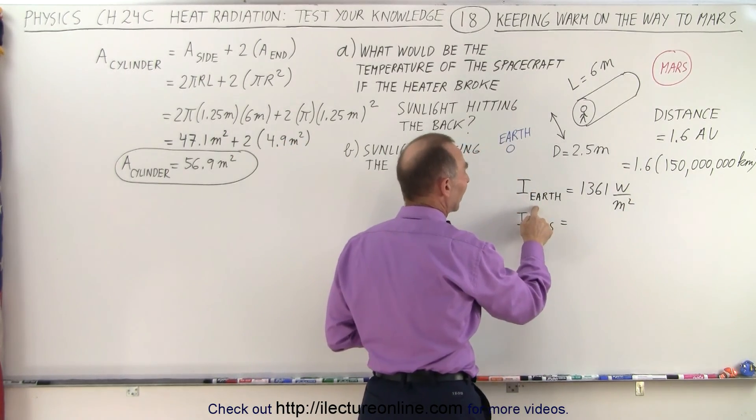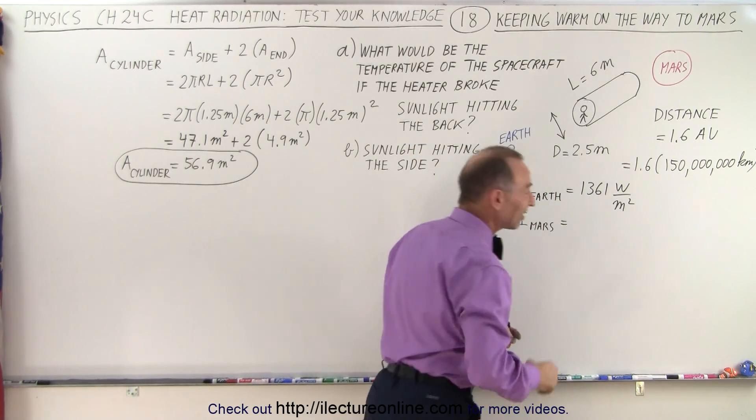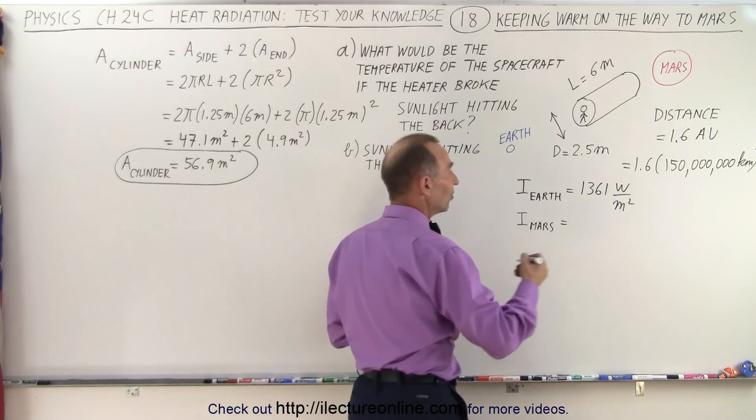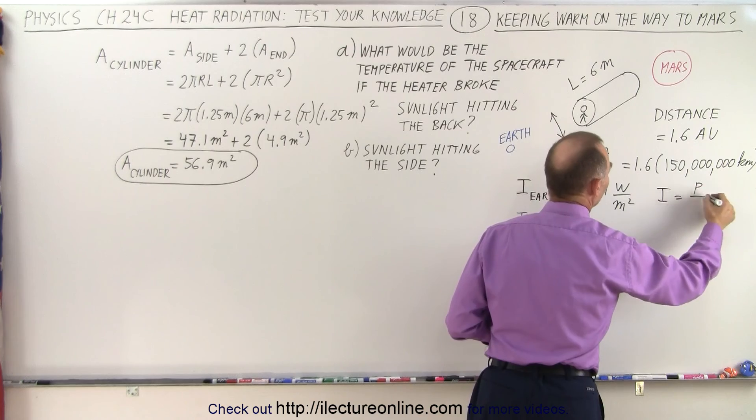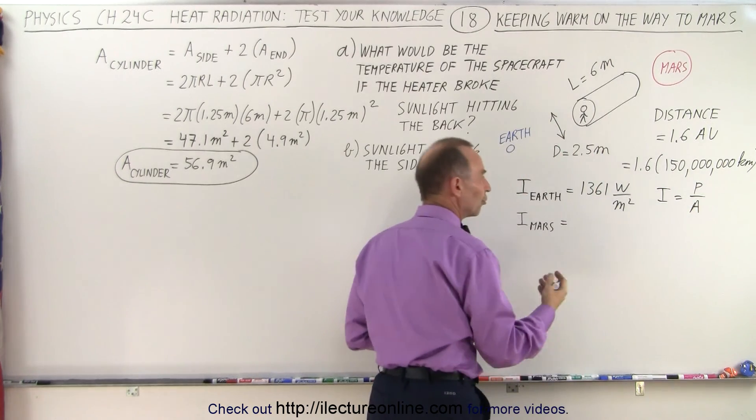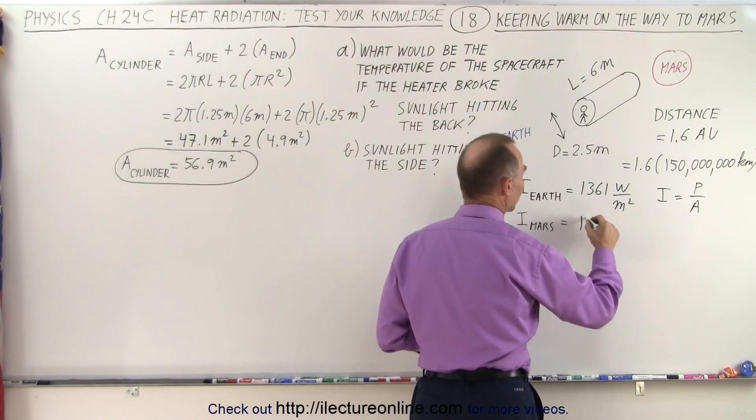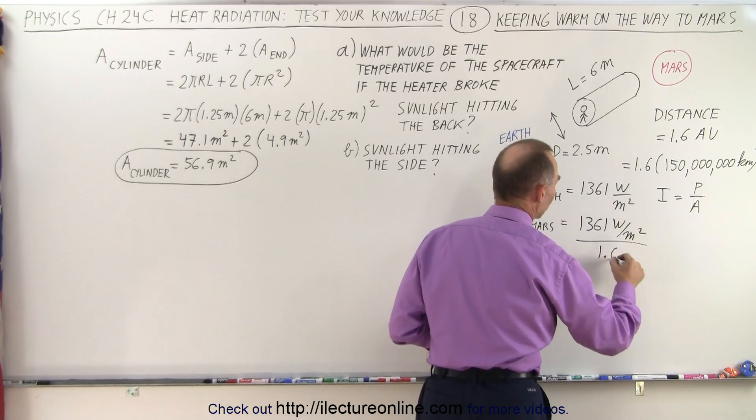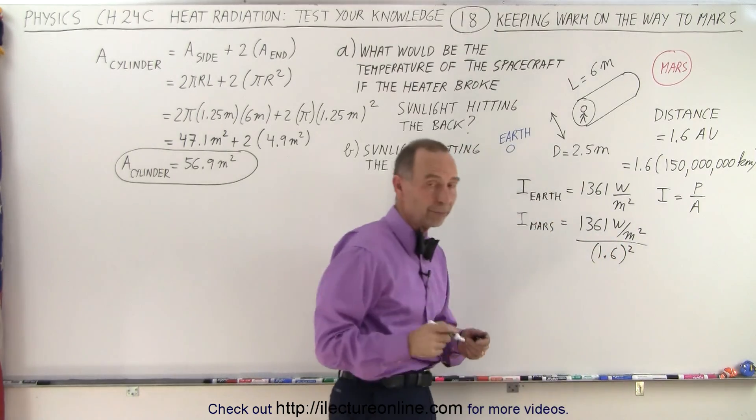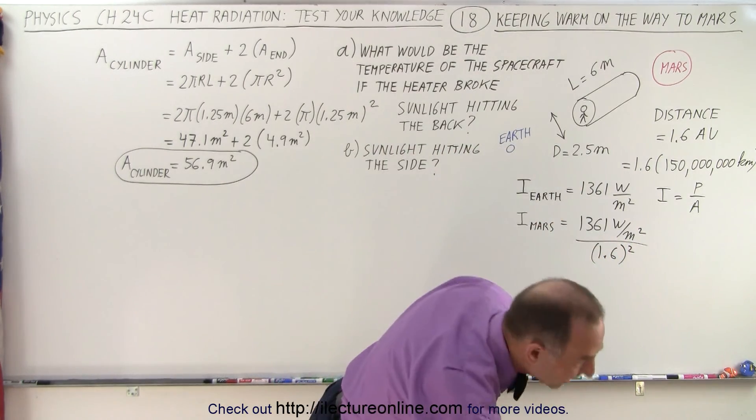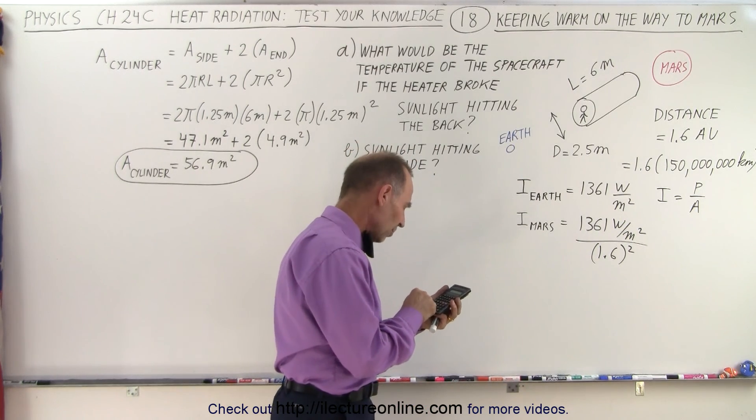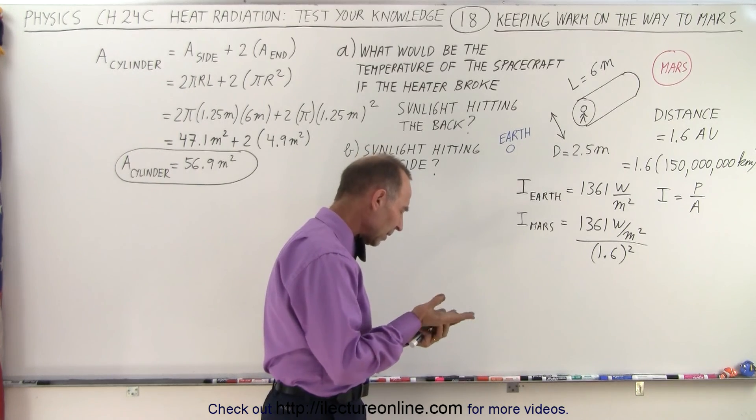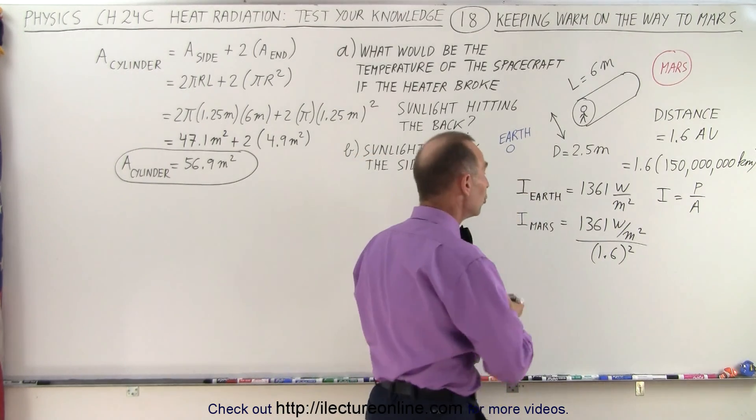The intensity of the sunlight reaching the distance of the Earth is 1,361 watts per square meter. So the intensity of Mars, well, notice that the intensity by definition is equal to power divided by area, and area is a function of distance squared, so that means that the intensity of Mars would be 1,361 watts per square meter divided by 1.6 squared, because that's how much farther Mars is compared to the Earth. So what would be the intensity of the sunlight by the time we reach Mars? 1361 divided by 1.6 squared equals would be about 532 watts per square meter.